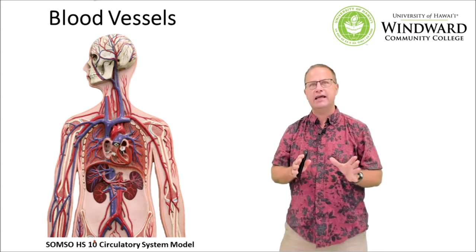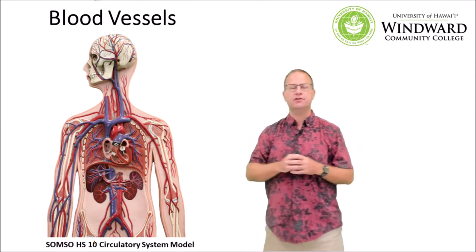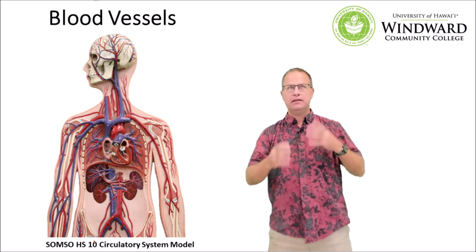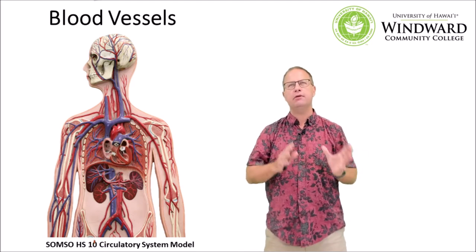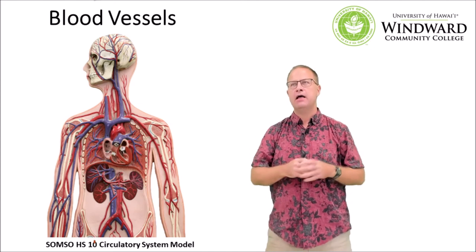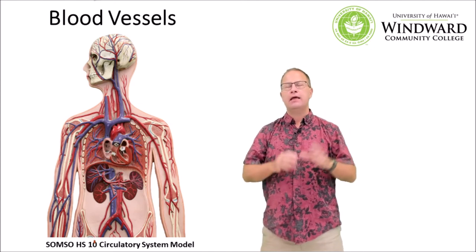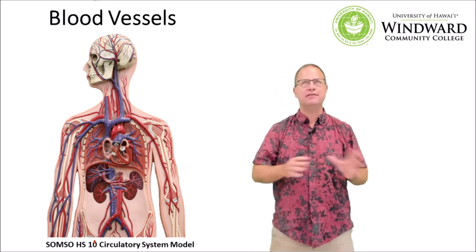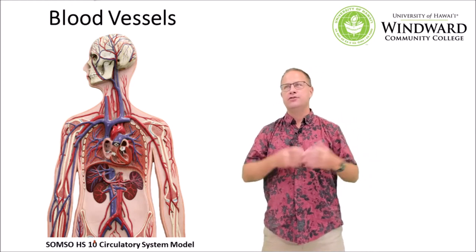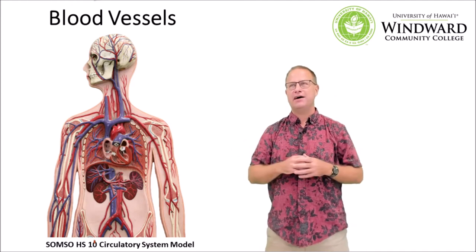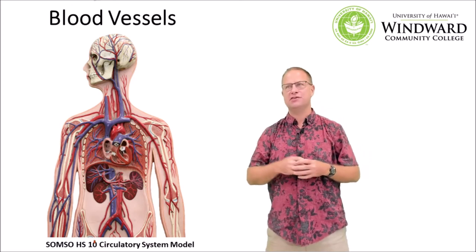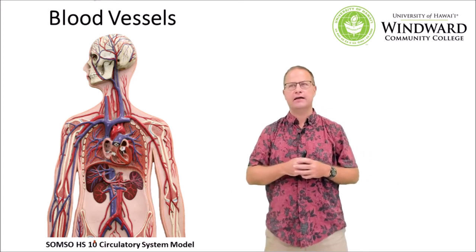The model we're going to use today is the circulatory system model — the one that was on a green background previously. It's not completely 100% accurate but it's probably one of the more detailed circulatory system models we have in the anatomy lab. Keep in mind that some of the blood vessels are misidentified in the key for this model, and we might have disagreements elsewhere. If you disagree on how I'm classifying a blood vessel, send me a note in the comments and I will adjust the presentation or put errata in the comments.